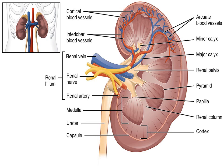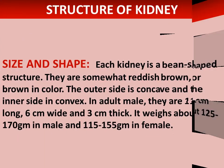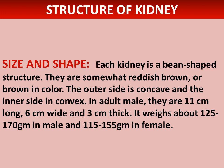Now we will go through the theory of the structure of the kidney. Regarding position, the two kidneys lie at the back of the abdominal cavity at about waist level, where they are protected to some extent by the spine and the lower part of the rib cage. Usually the left kidney is slightly above the right. At the interior end of each kidney is an adrenal gland.